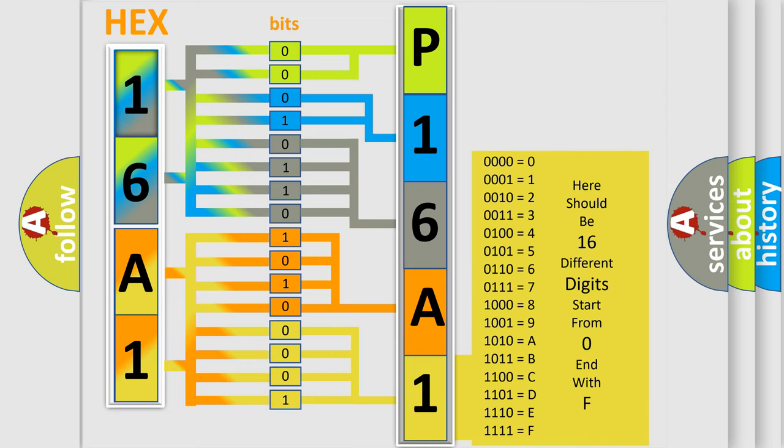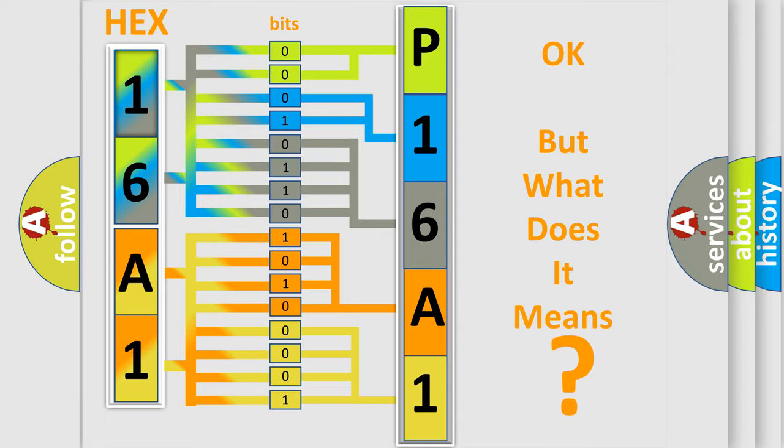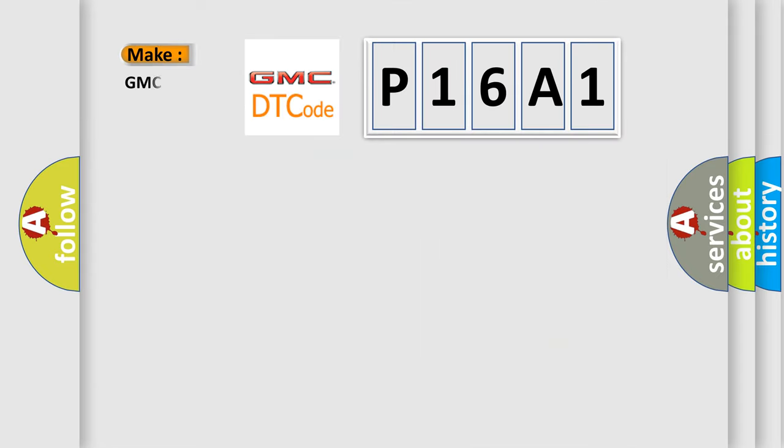We now know how the diagnostic tool translates the received information into a more comprehensible format. The number itself doesn't make sense if we can't assign meaning to it. So, what does the diagnostic trouble code P16A1 interpret specifically?